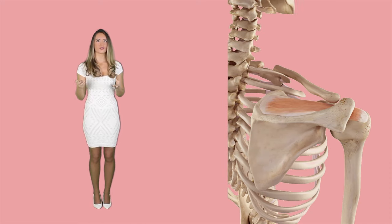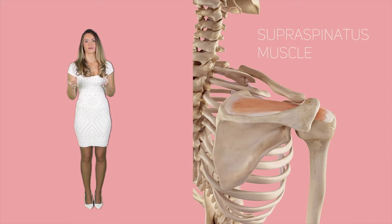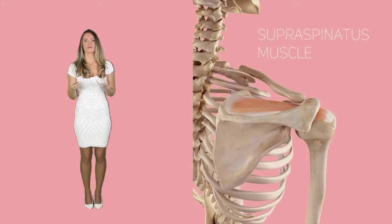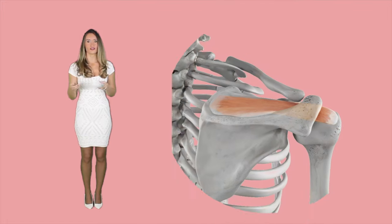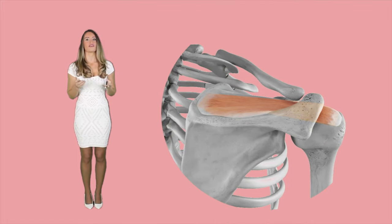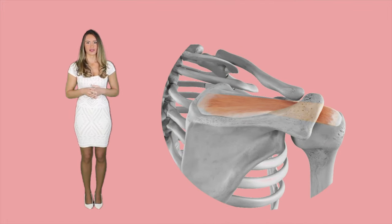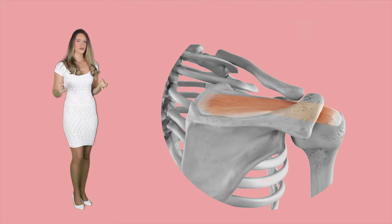Abductor muscles: this group consists of the supraspinatus muscle which forms between the greater tubercle of the humerus bone with the flat and broad scapula. This muscle medially rotates.